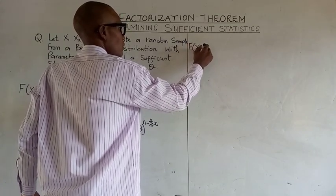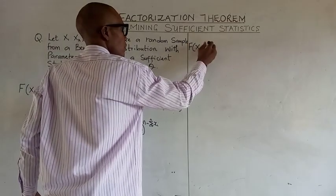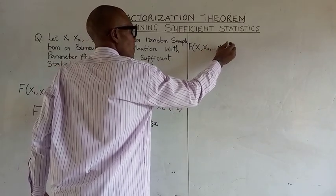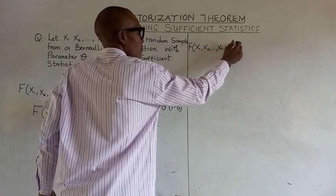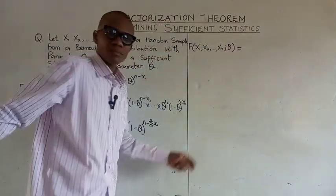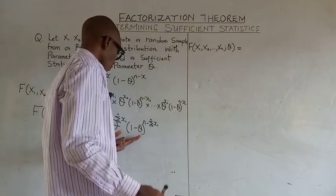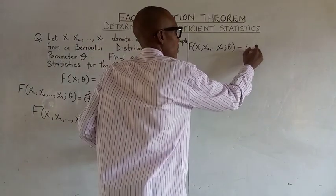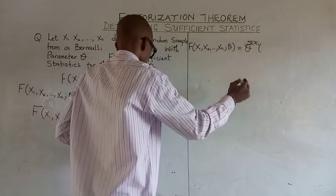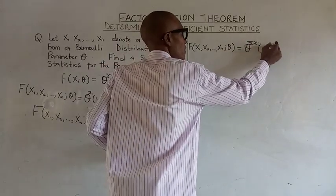We write the function x1 x2 to xn and theta, which is equal to theta^(summation of xi) (1 minus theta)